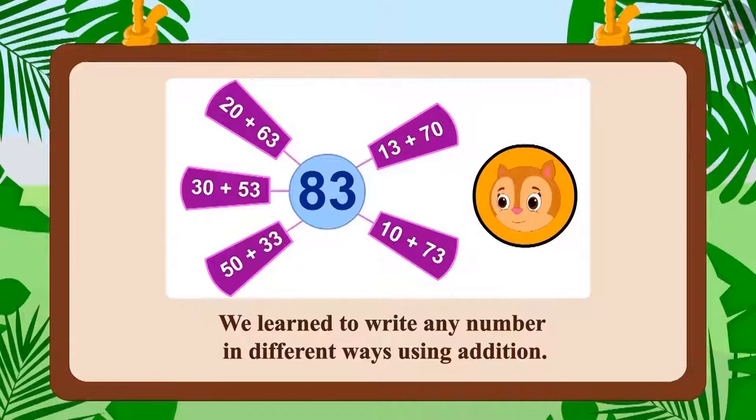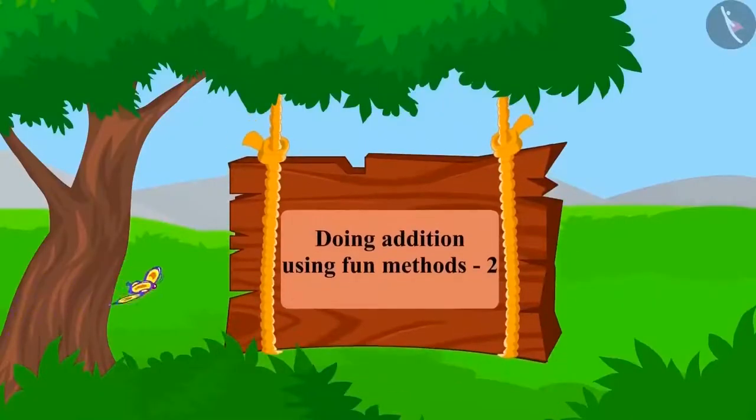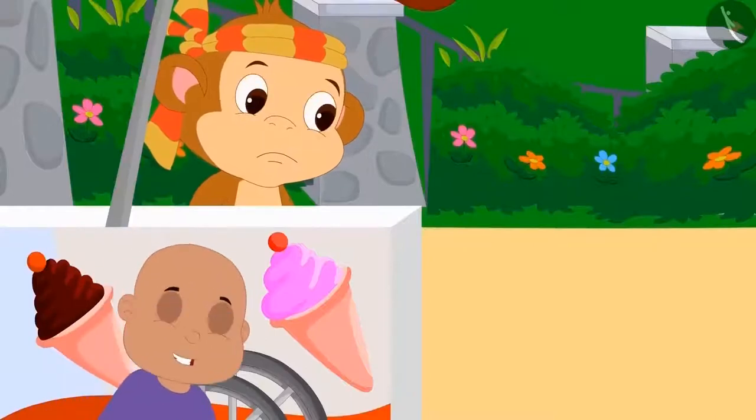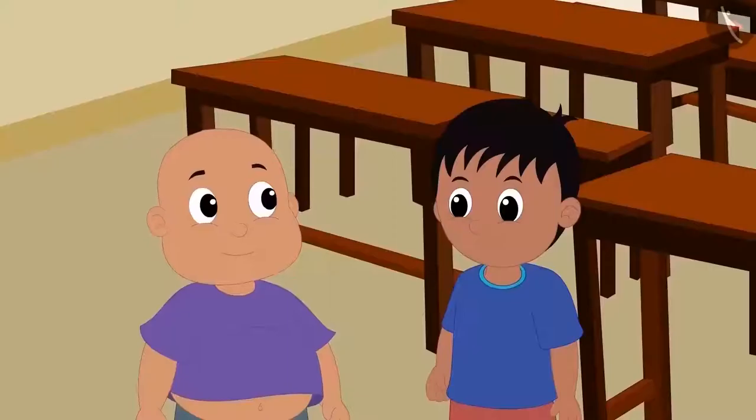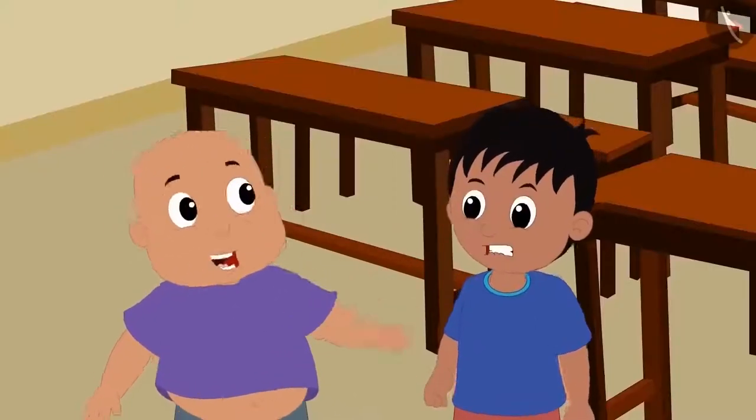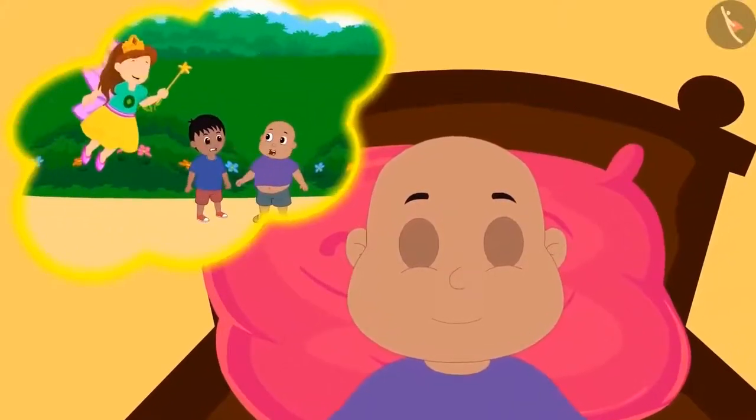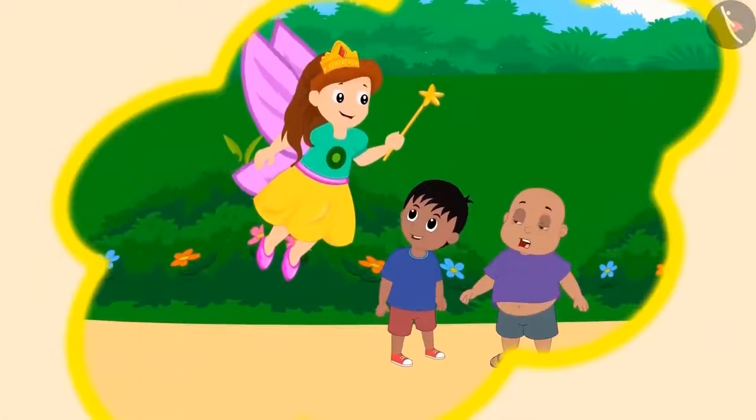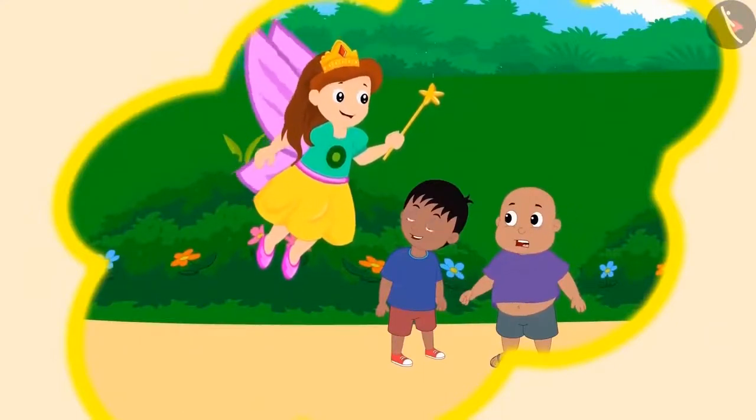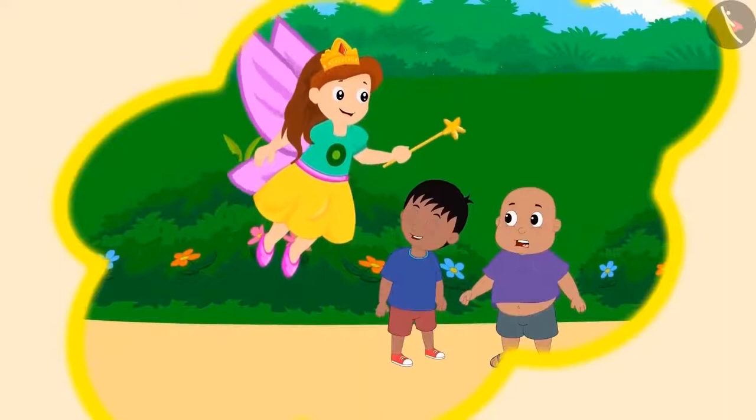Children, in the previous lesson, we learned to write any number in different ways using addition. In this lesson, we will see some interesting examples of it. Bablu does a lot of mischiefs. He often makes fun of other children. One day, an angel came in Bablu's dream and told him that if he does not stop his mischiefs, then his nose will grow longer every time he is mischievous.